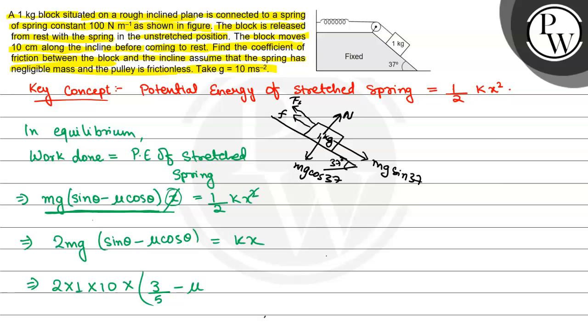We have to find mu and cos theta is 4 by 5. That equals k, which is 100 newton per meter, times x, which is 10 centimeter or 0.1 meter.